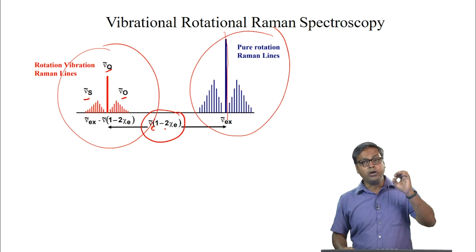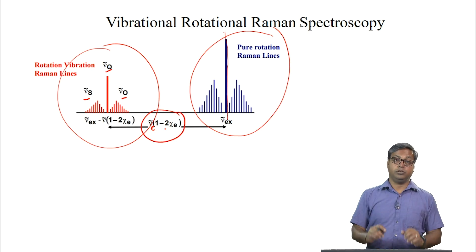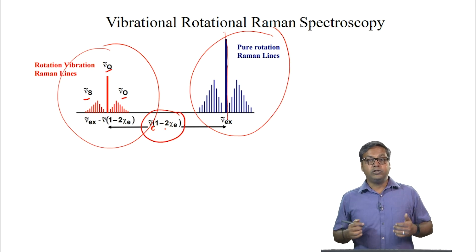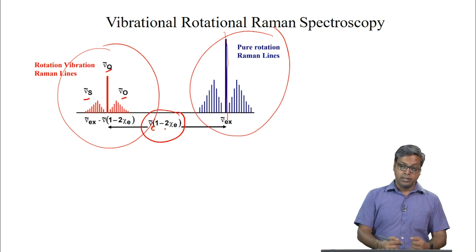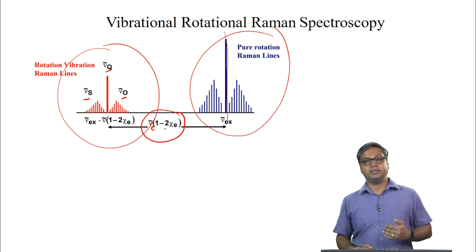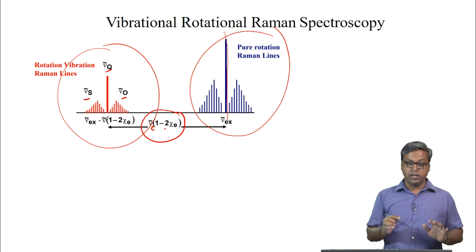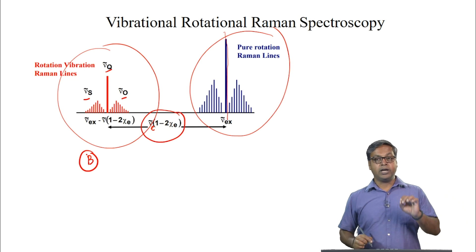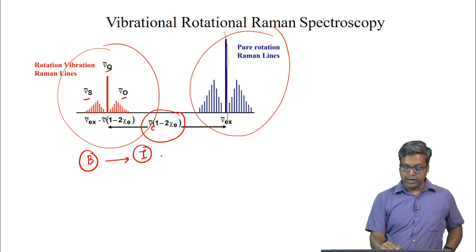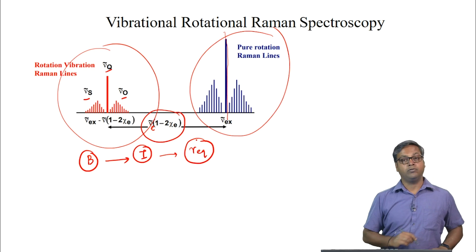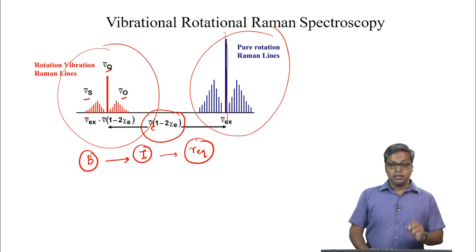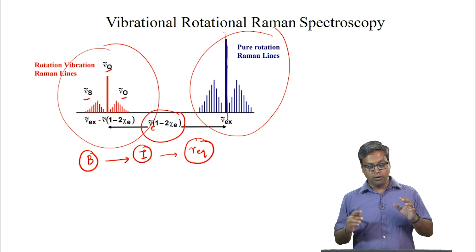The presence of the strong Q branch in the Raman spectrum is to be noted and compared with the P and R branches only, which occur for a diatomic molecule in the infrared. The analysis of the O and S branches in the Raman spectrum can provide the value of the rotational constant B, and once we know the moment of inertia, we can get the equilibrium bond length R_equilibrium. For larger molecules, the fine rotational structure is not resolved and can be ignored.